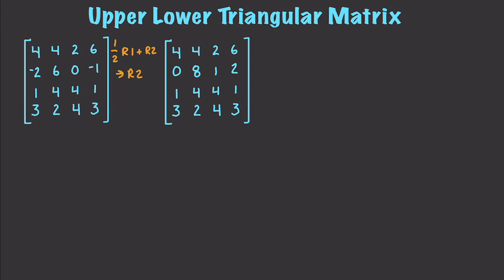Then I want to zero out the first element in the third row. So I'm going to take R3 minus one fourth times R1 and place that inside of R3. And if I do that, this is going to become 0, this is going to become a 3, this is going to be 7 over 2, and this is going to be negative one half.